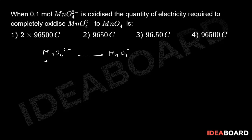Here the oxidation state is +6, and here it is +7, so there is one electron released. So if n = 1, that is the number of electrons exchanged, then for 1 mol, 1 Faraday is required.